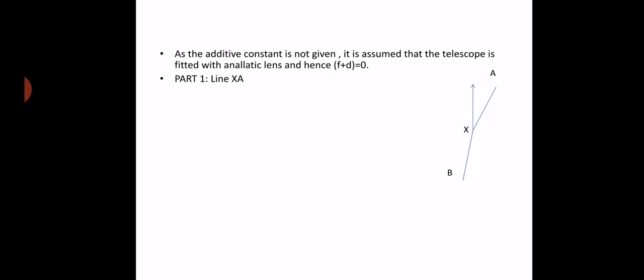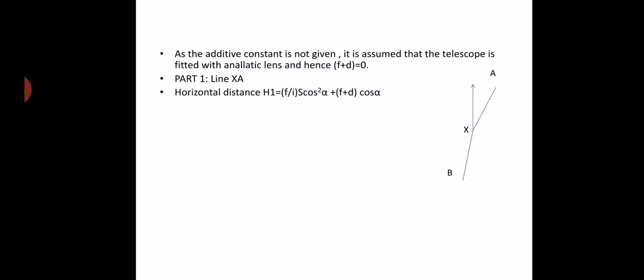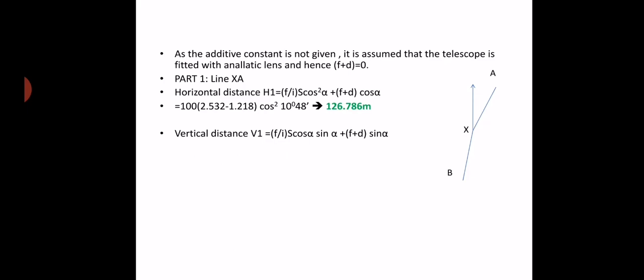I'm dividing this problem into two parts. In Part 1 we deal with XA, and in Part 2 with XB. For the horizontal distance H1 = (f/i) × s × cos²α + (f+d)cosα. Substituting the values with the multiplying constant 100, we get H1 = 126.786 meters. For the vertical difference V1 = (f/i) × s × cosα sinα + (f+d)sinα, giving V1 = 24.18 meters.